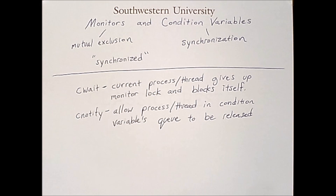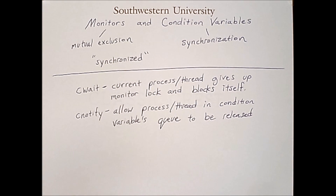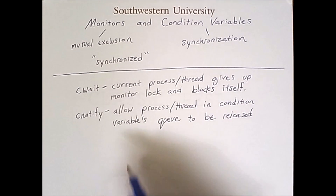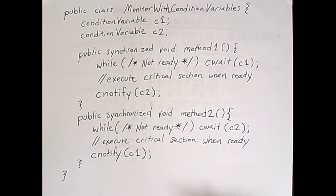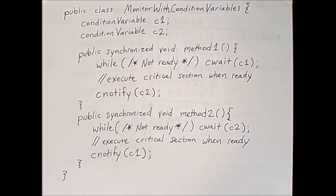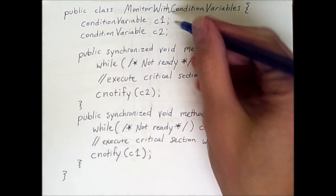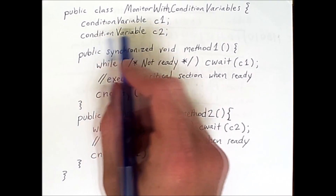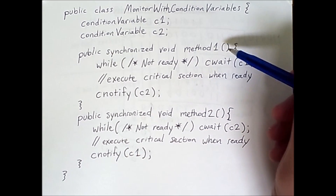This level of synchronization is typically needed when you have different types of processes or threads doing different jobs. A pure monitor with no condition variables is very useful when all you want is mutual exclusion. But to see how condition variable operations are useful, we need slightly more complicated pseudocode. This code is in the Java style but is pseudocode. We've defined a class called MonitorWithConditionVariables, with two global variables of type condition variable named C1 and C2, and two different synchronized methods: method one and method two.